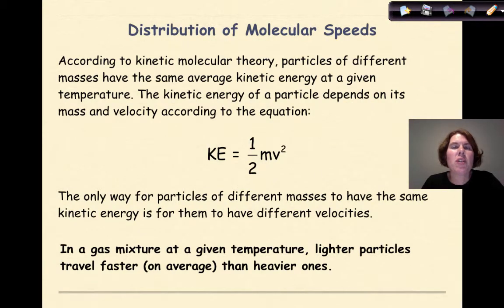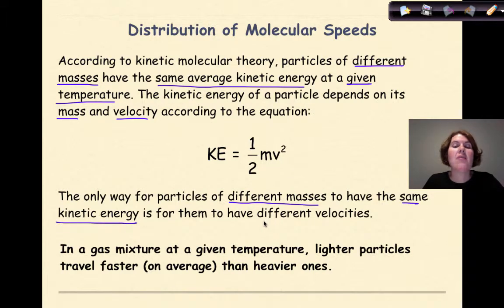So now let's talk about the distribution of molecular speeds. According to the kinetic molecular theory, particles of different masses have the same average kinetic energy at a given temperature. The kinetic energy of a particle depends on its mass and velocity. According to the equation, kinetic energy equals one half mass times velocity squared. The only way for particles of different masses to have the same kinetic energy is for them to have different velocities. So in a gas mixture at a given temperature, lighter particles travel faster on average than heavier ones, which makes sort of sense if you think about them.